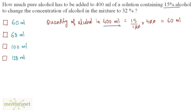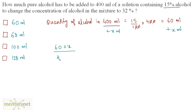Now, I have to increase the concentration of alcohol in the mixture to 32%. To do that, I will have to add some pure alcohol to this solution. Let's say I add x milliliters of alcohol — the solution's volume will also increase by x milliliters. The required percentage is 32%, so if I take the new percentage of alcohol, I can write (60 + x) out of (400 + x) milliliters.